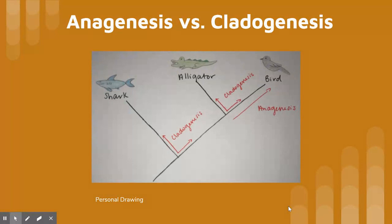Anagenesis is evolution within a lineage over time. This is observed by looking at the tree and tracing the solid line to the bird. There is no observed splitting after the alligator.